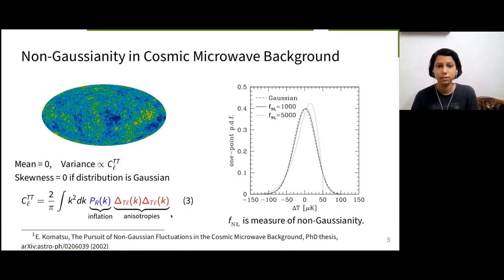Similarly, the third moment determines skewness and is related to the three-point correlation or the bispectrum, and so on. If the CMB is Gaussian, it can be captured by this bispectrum. In the figure, we can see the effect of non-Gaussianity for fNL equal to 1000 and 5000, where fNL is the measure of non-Gaussianity. We shall see the definition of fNL in the upcoming slides.